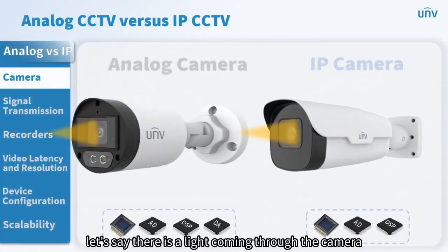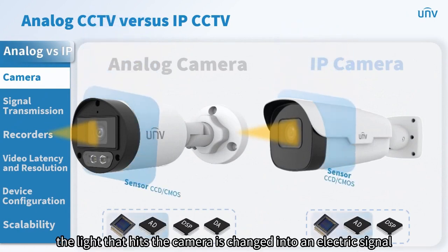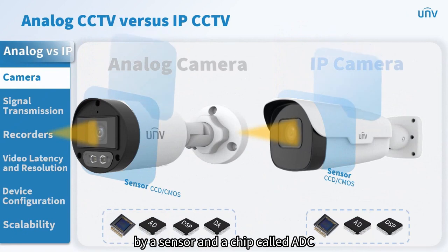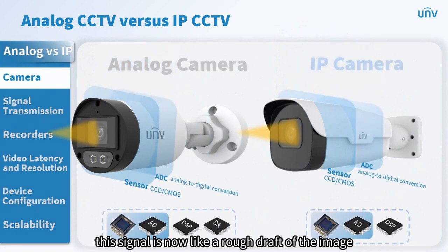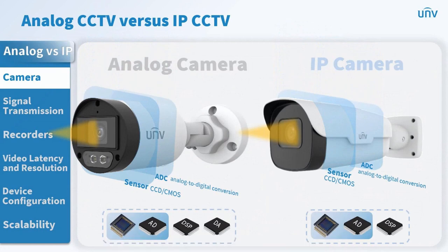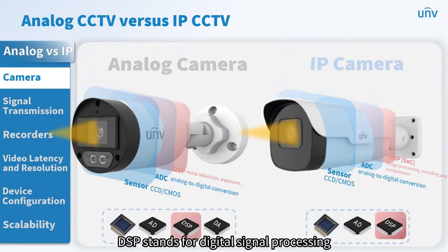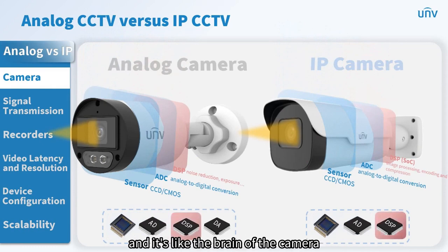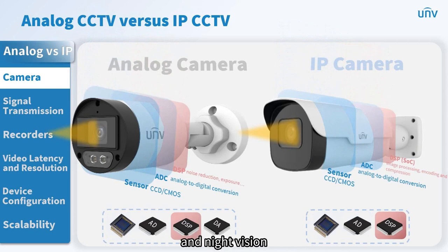Let's say there is light coming through the camera. The light that hits the camera is changed into an electric signal by a sensor and a chip called ADC. This signal is now like a rough draft of the image. To make the image better, another chip called DSP edits it. DSP stands for digital signal processing and it's like the brain of the camera. It can make the image look nicer by adding things like brightness, color, and night vision.